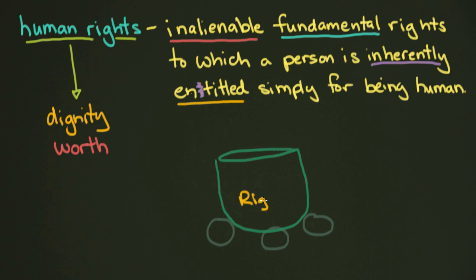We've got our Rights Soup in here — it's orange for some reason. There's our soup, maybe there's like a carrot in here or something like that. Rights Soup, sitting on these three stones right here, and there's some firewood underneath there. We've got a little blaze going, which means our soup is warming up. Now, if we were to pull out one of these stones, the soup would tip over and there would be nothing to eat. So what would we be basing this soup bowl on are these fundamental, foundational stones?